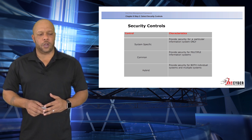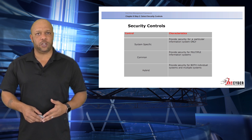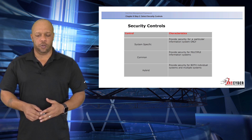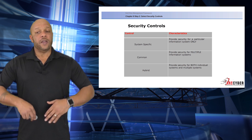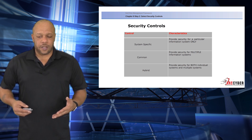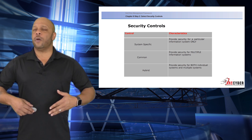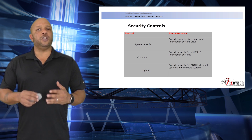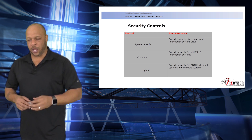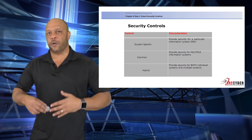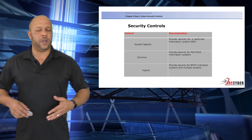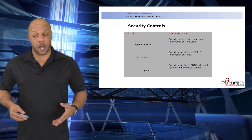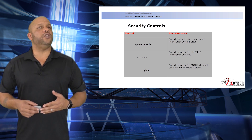When we look at these security controls, we have three base selections. They will either be system-specific, a common control, or a hybrid control. These controls are identified simply by ownership or some portion of ownership. System-specific controls provide security for a particular information system only. Common controls provide security for multiple information systems under their umbrella, and hybrid security controls would be a combination of the two.